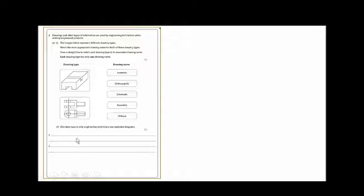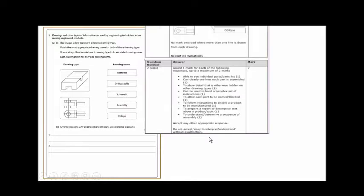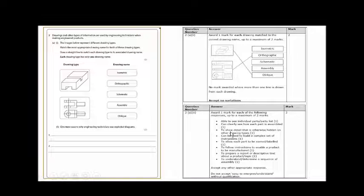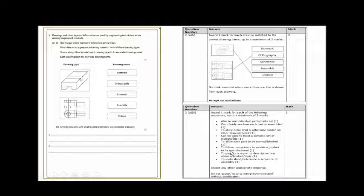Give two reasons why engineers use exploded diagrams. You'll be able to clearly see all the parts, and you can clearly see how each part is assembled and where it fits. It shows detail that is otherwise hidden. Other acceptable answers include: allows each part to be named or labeled. They only want two answers.